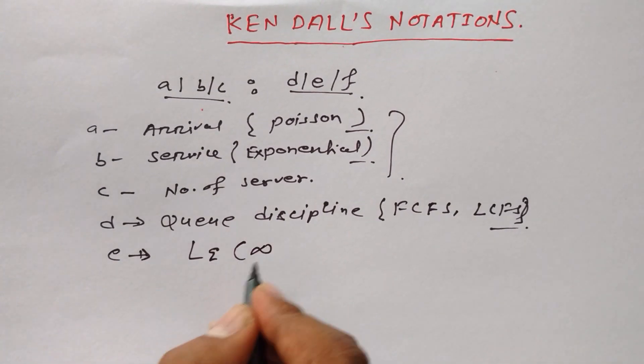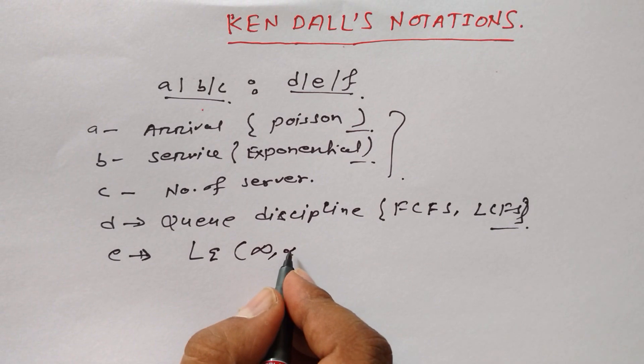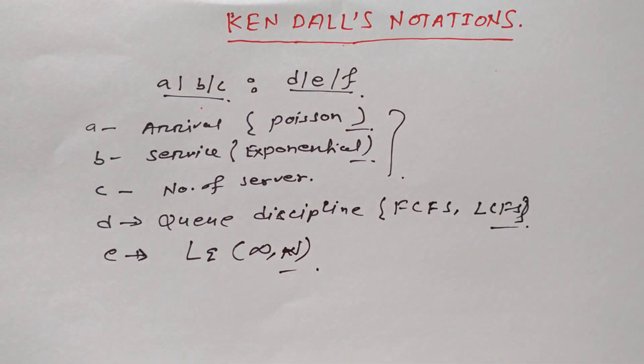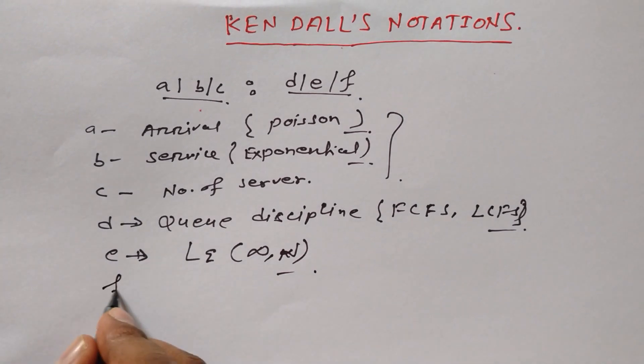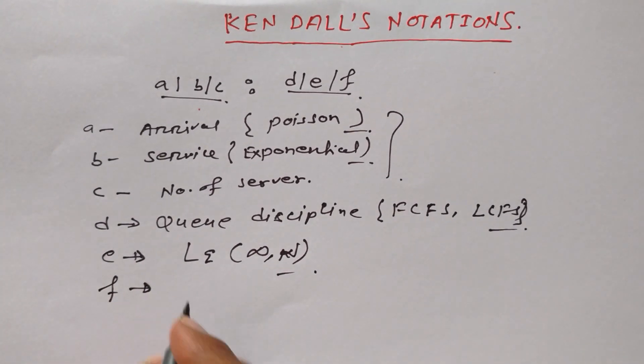Now E: E is length of queue, Lq. It is divided by Lq and infinity, or maybe N. So anything it could be. Length of the queue could be anything, it depends on the situation we are having.